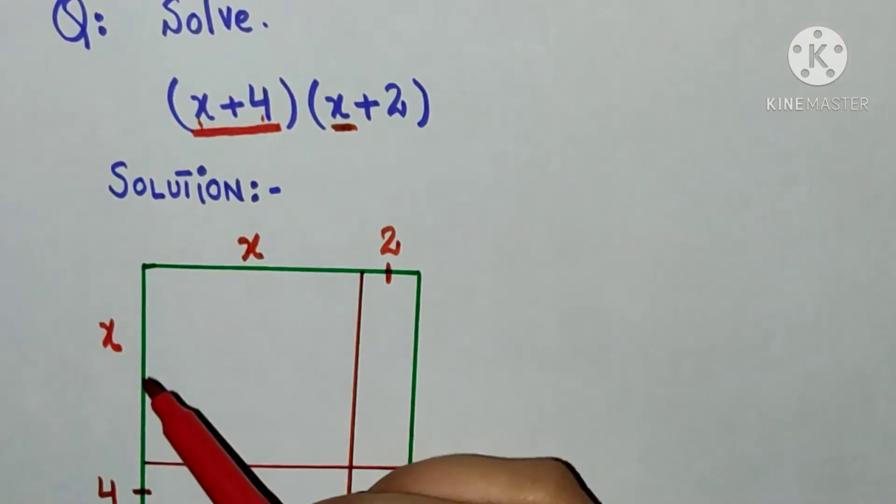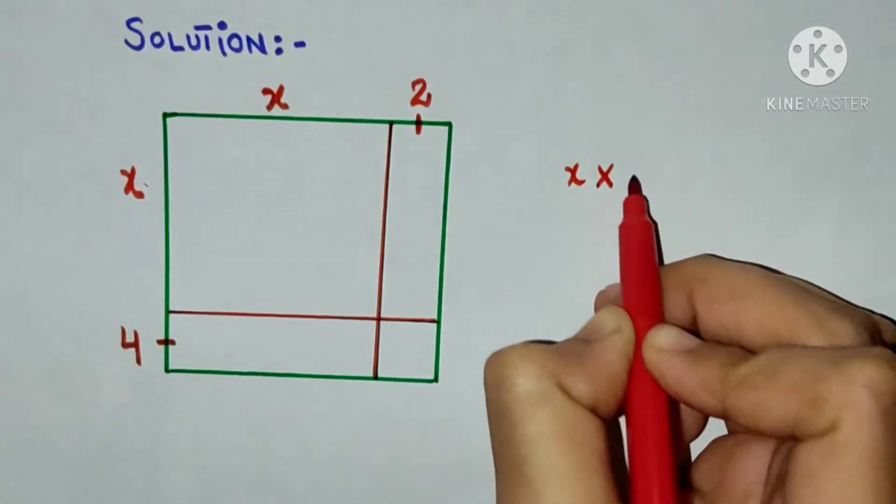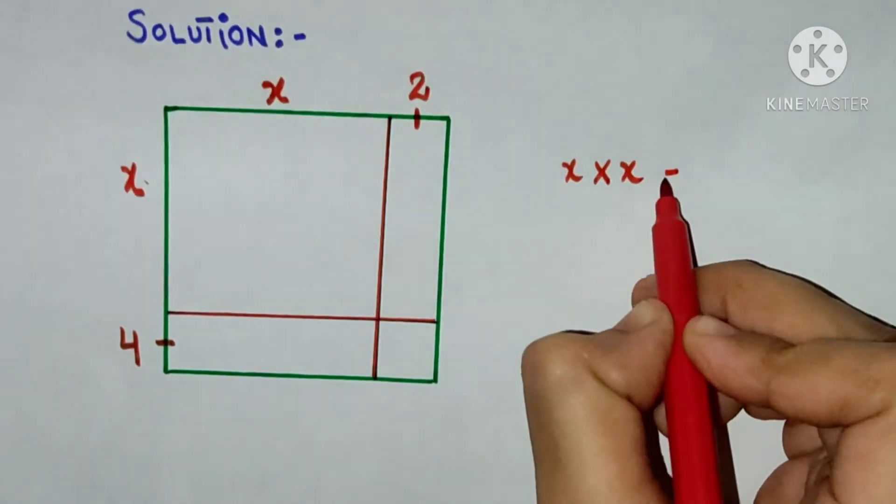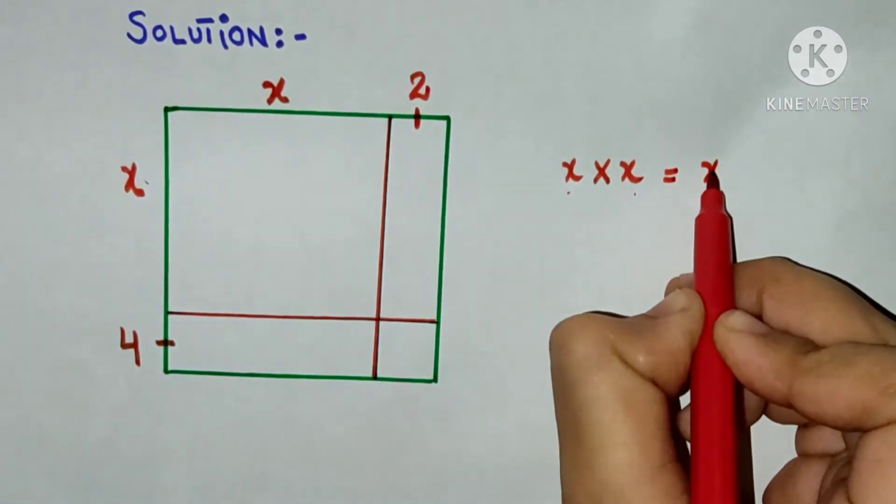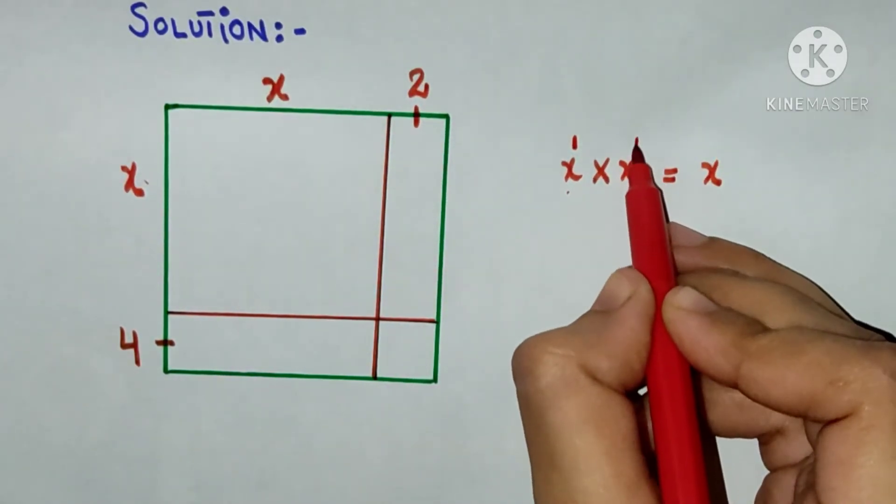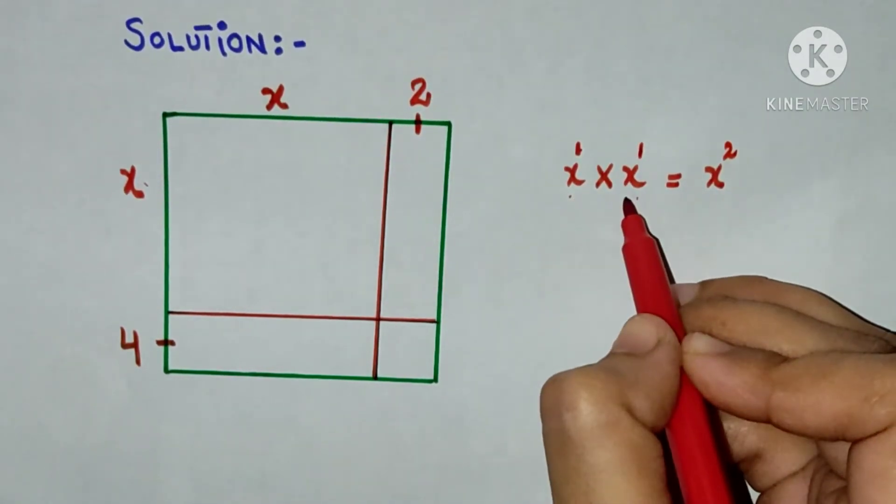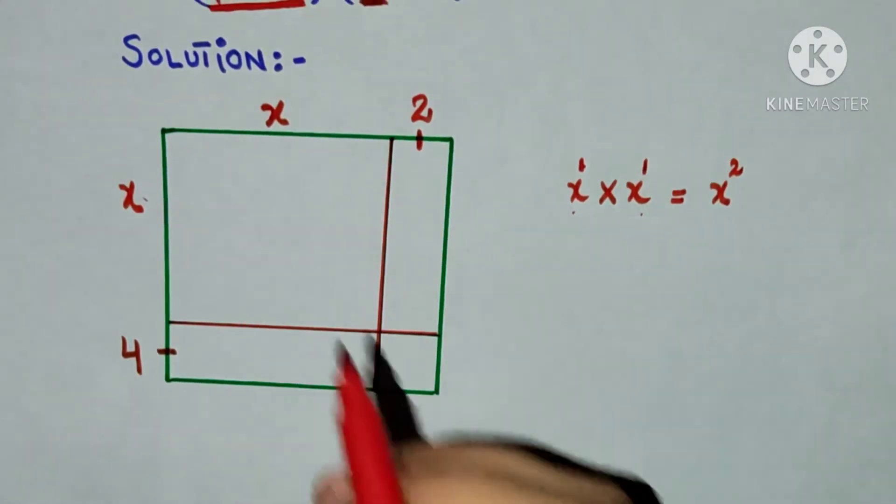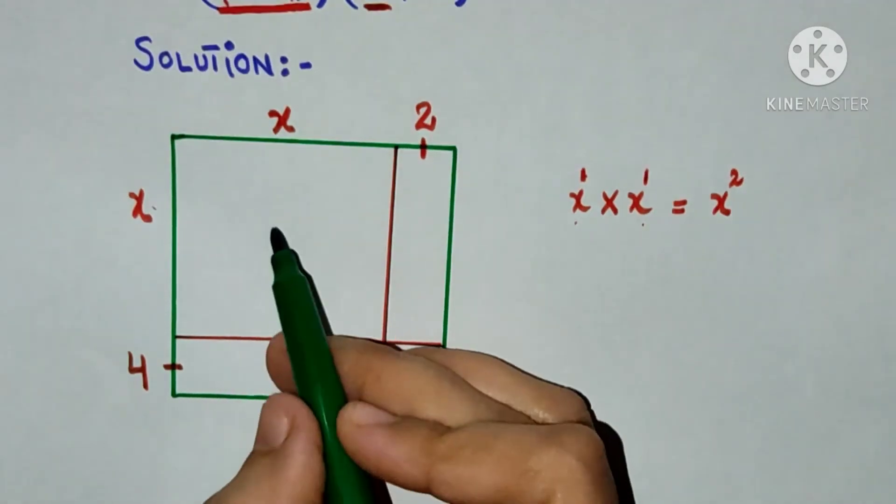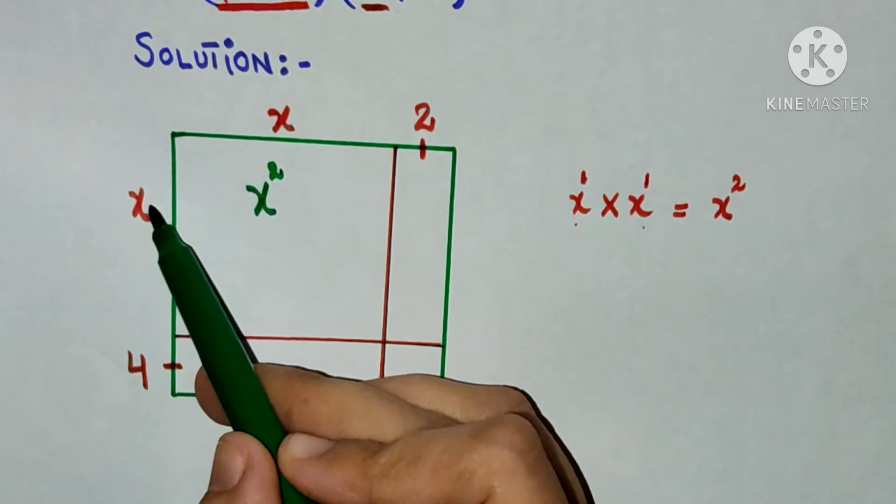Now what I will do here is just multiply. x times x: the base is same, so one time we write base. Here I have power 1, here I have power 1, so 1 plus 1 is 2. So x multiplied by x is equal to x squared. I will write x squared over here.